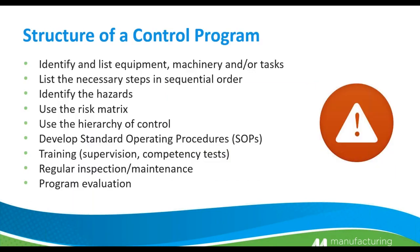The structure of a control program looks very similar to what we talked about in the last webinar on hazard identification. The first step is to identify and list the equipment, machinery, and/or tasks. List the necessary steps in sequential order. Identify the hazards and use a risk matrix — will it be an A, B, or C hazard? Then use the hierarchy of control: can we eliminate it, substitute it, apply engineering controls, administrative controls, or lastly PPE?